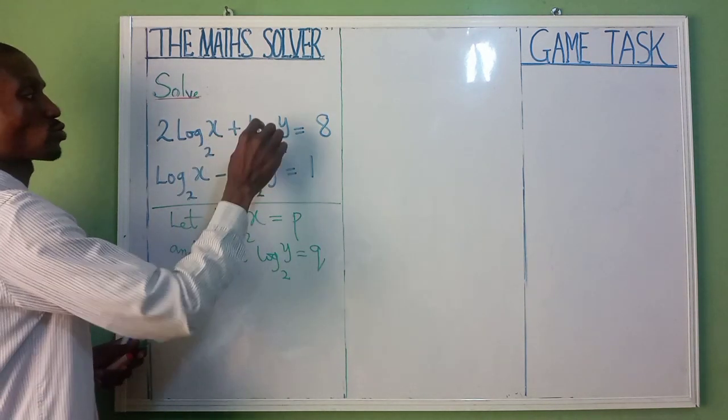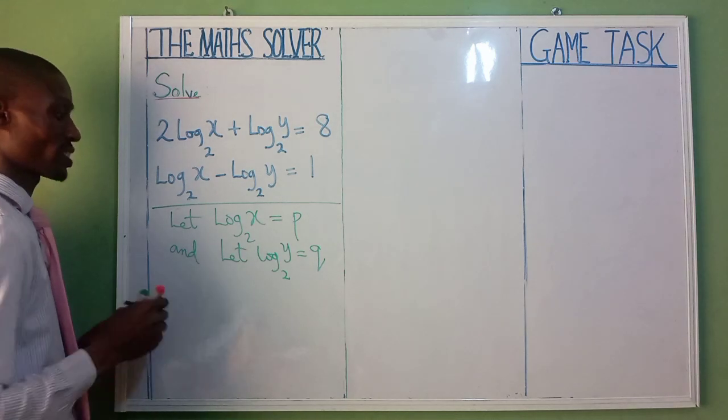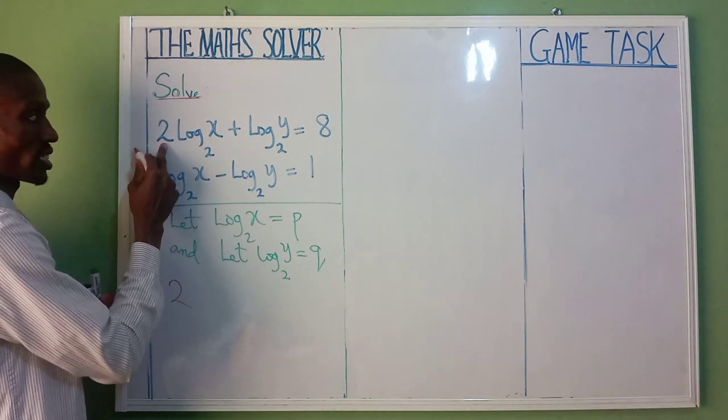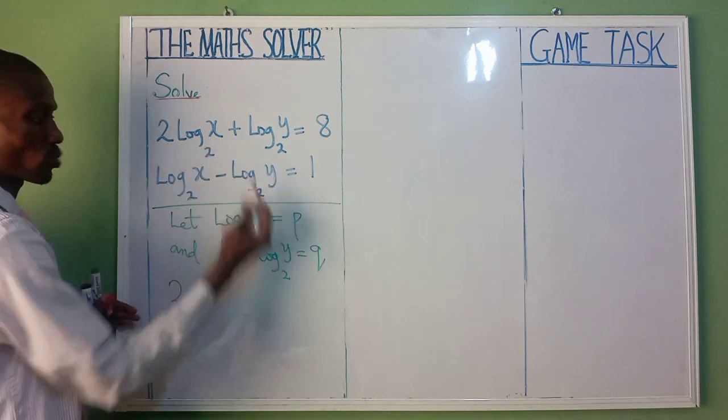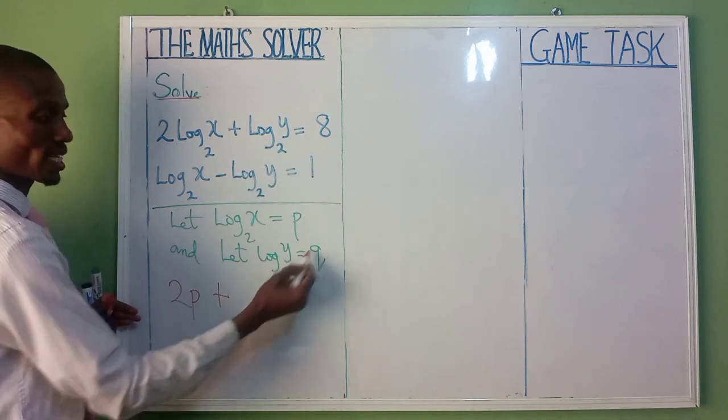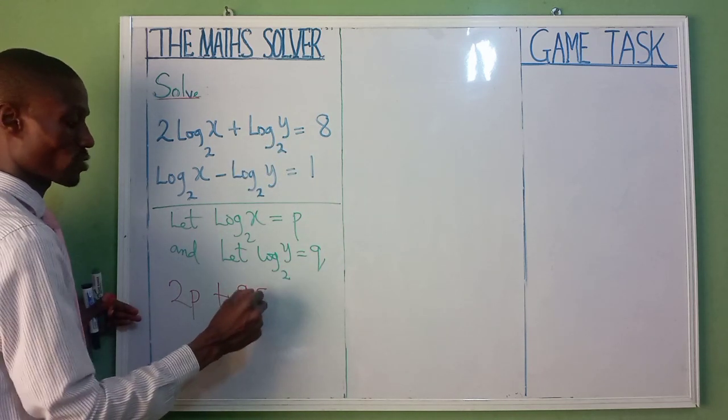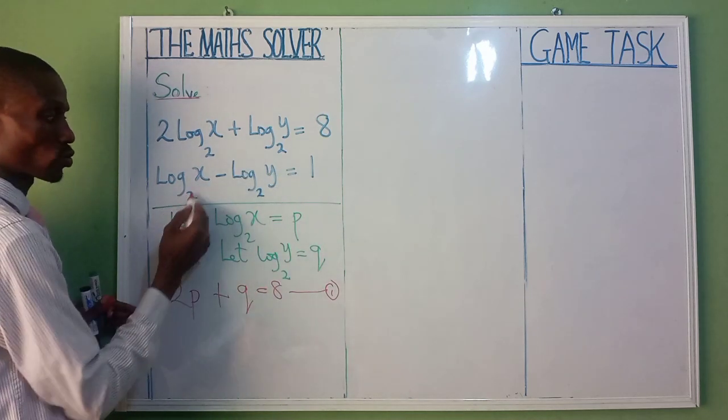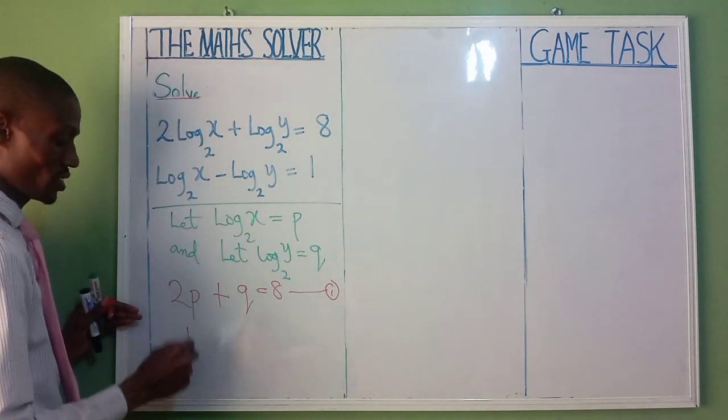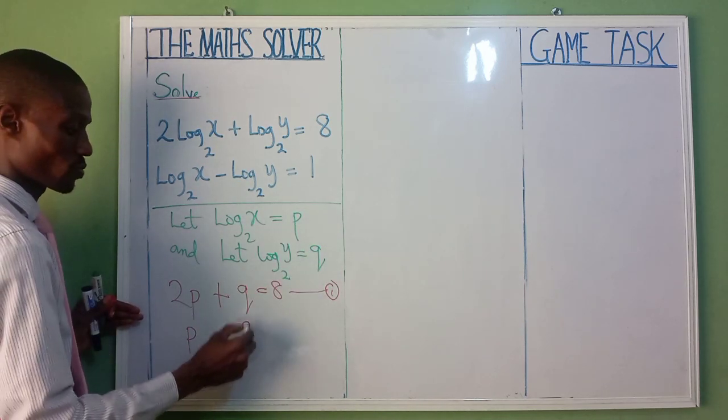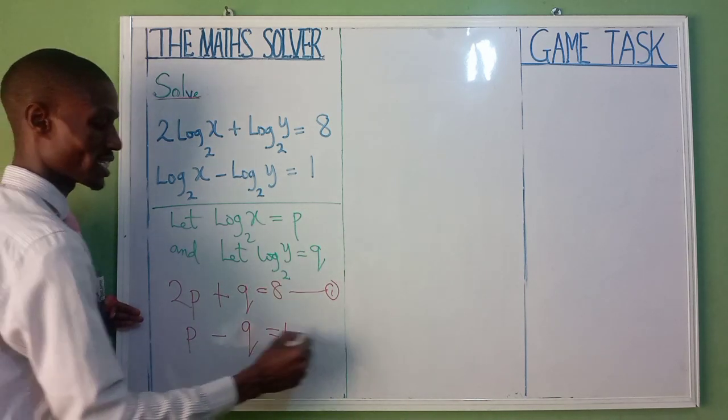Instead of writing all this log 2x and log 2y, I'm going to now write: 2 log 2x, that is log 2x is now p, so 2p plus q equal to 8, equation 1. The second one, log 2x is p, we have minus log 2y is q, equal to 1, equation 2.